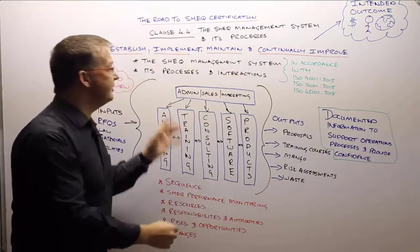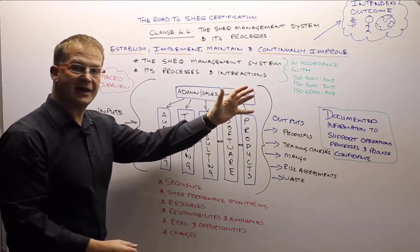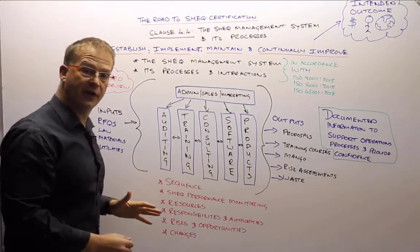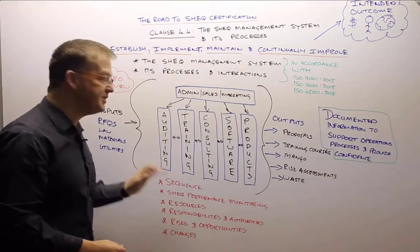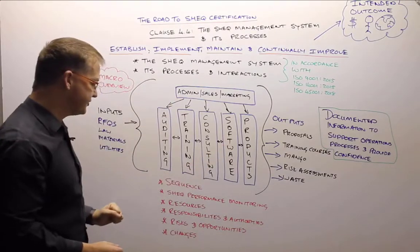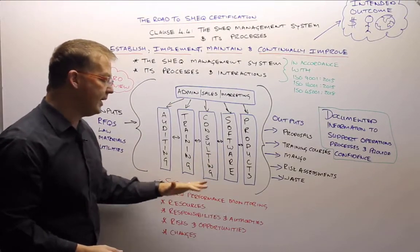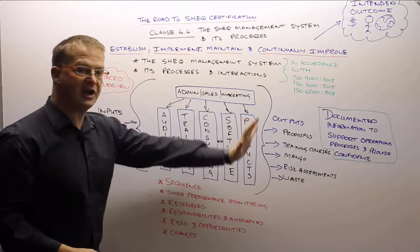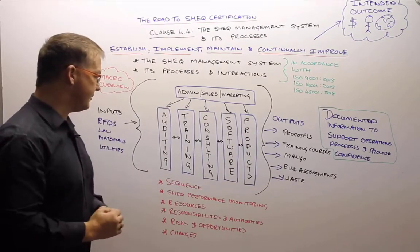So when we're considering these processes and interactions, we need to consider the following: We need to consider the sequence of these interactions, we need to consider where, when and how we're going to look at the check performance monitoring and measurement.